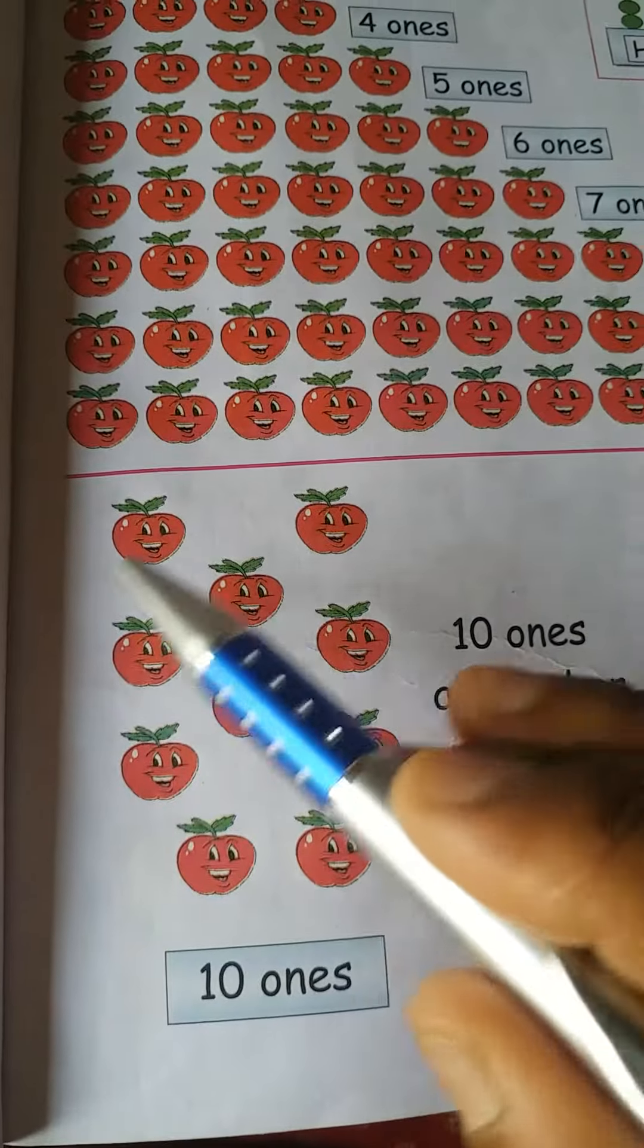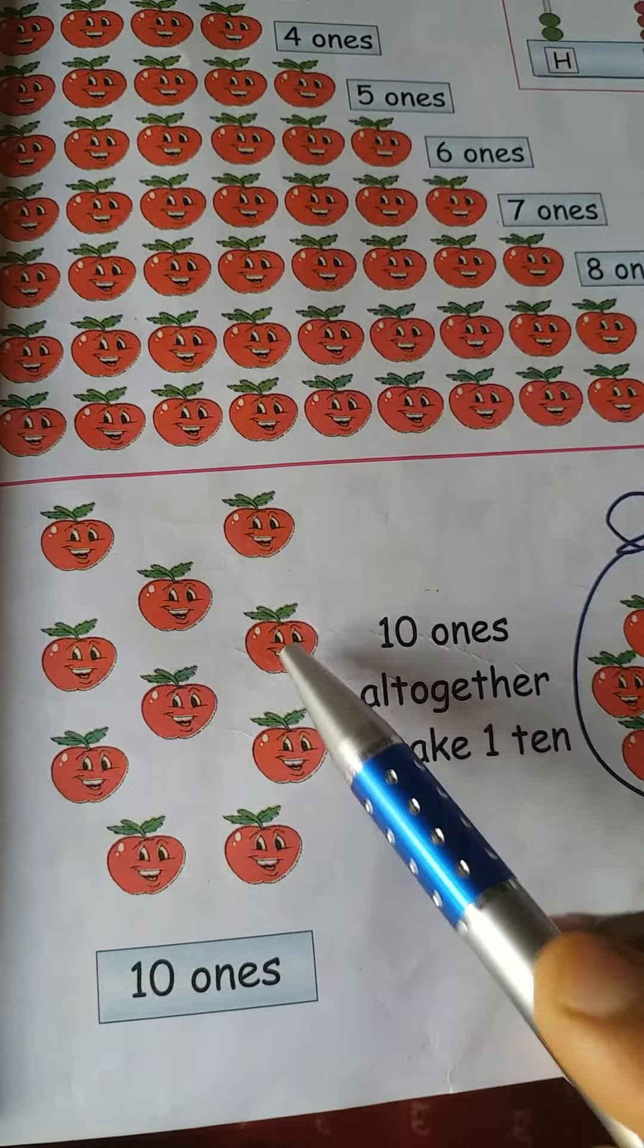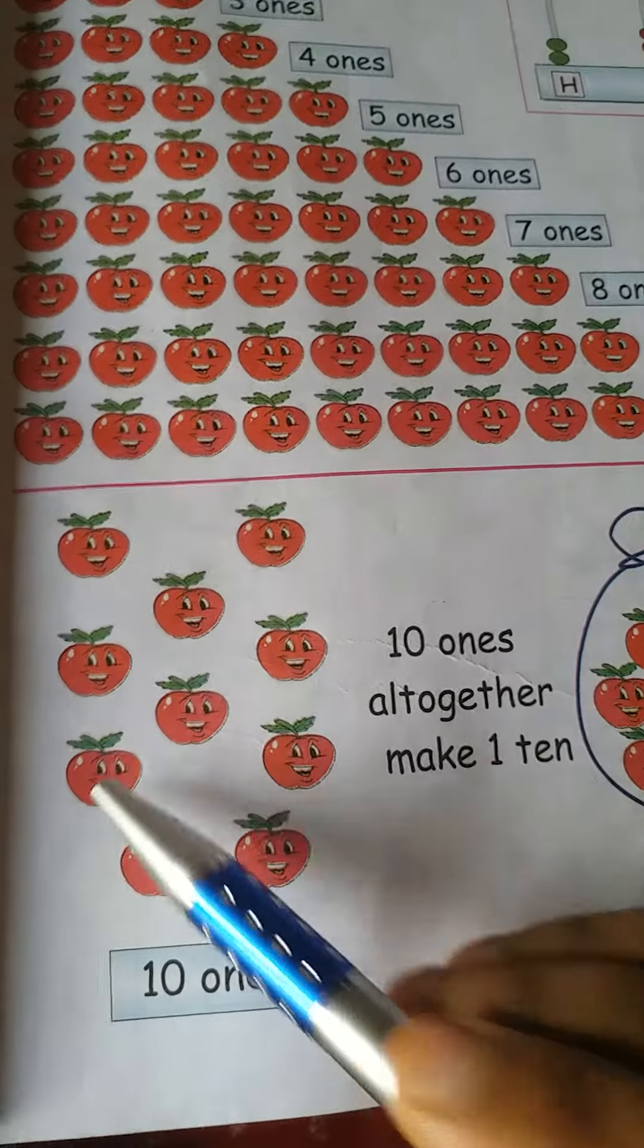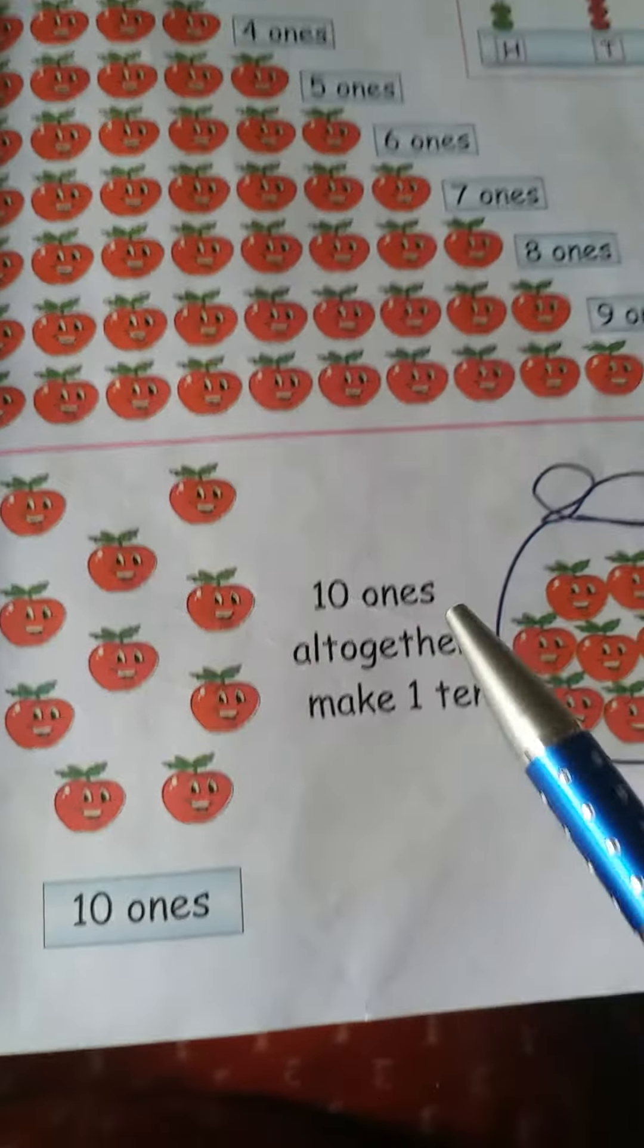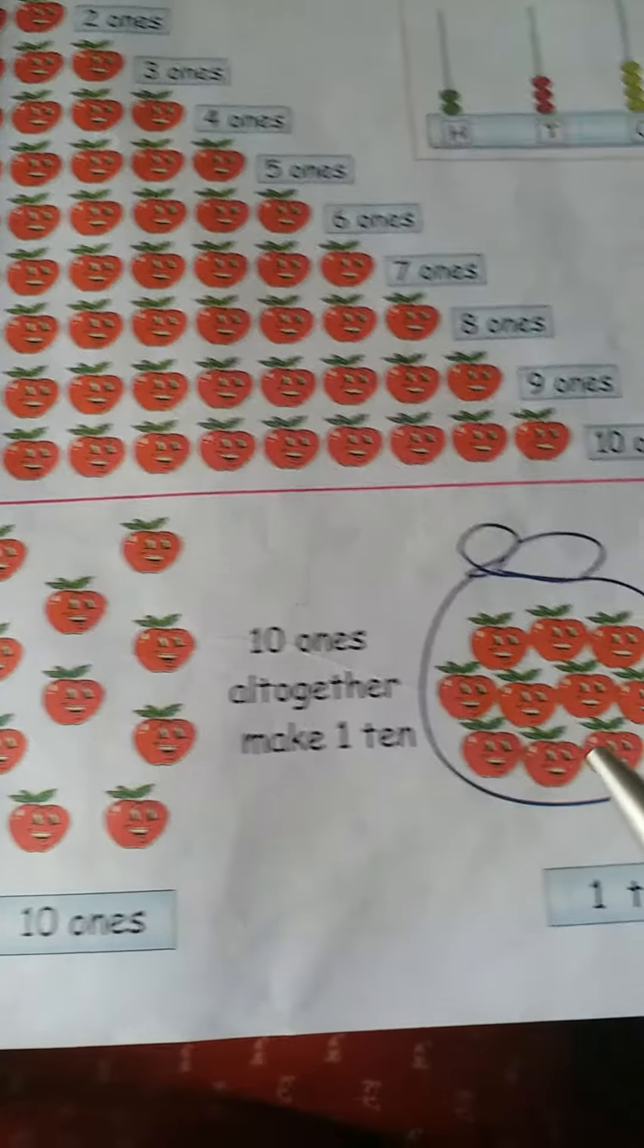Come here. How many apples are there? Count. One, two, three, four, five, six, seven, eight, nine, ten. See, what is written here? Ten ones. So ten ones altogether make one ten.